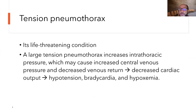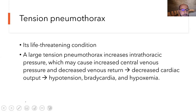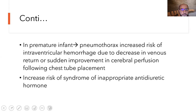Tension pneumothorax is a truly life-threatening condition. Large accumulation of intrathoracic pressure compresses the central venous return, decreasing venous return and producing a cardiogenic shock picture with decreased cardiac output, hypotension, bradycardia, and hypoxemia.